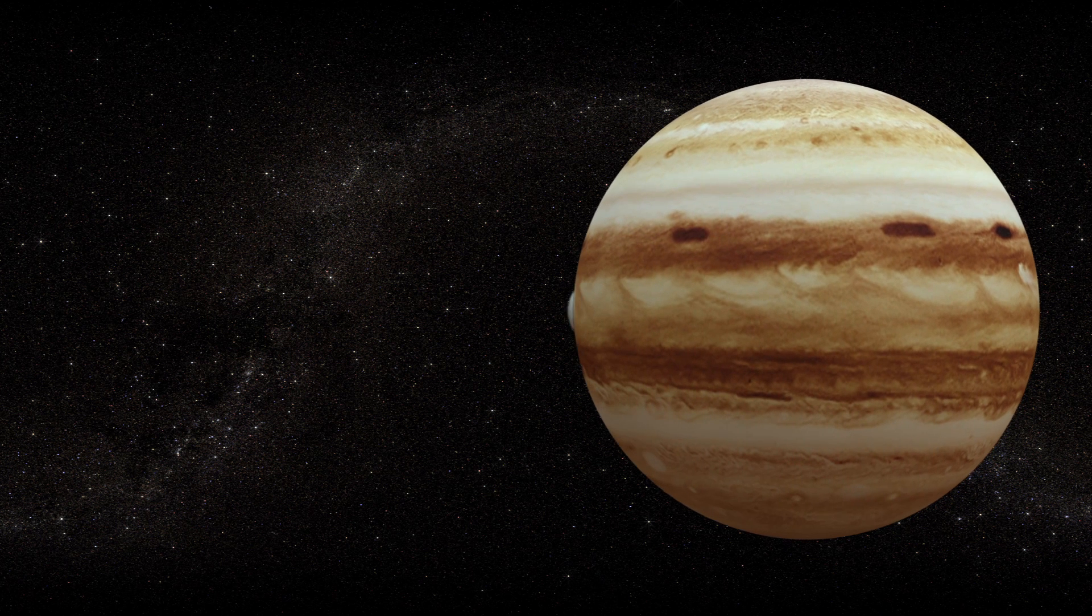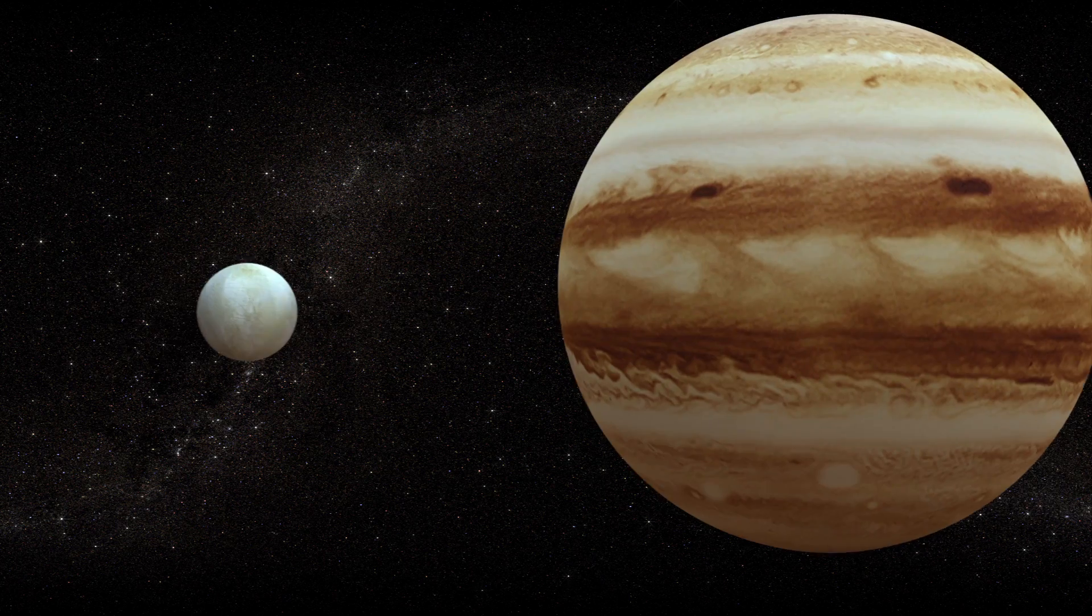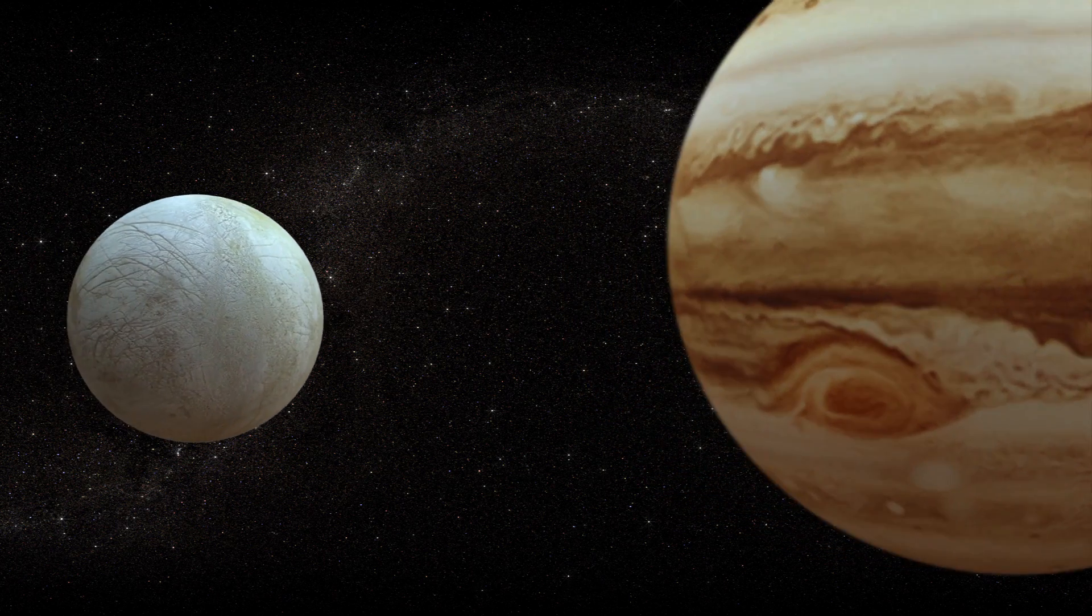Jupiter's moon, Europa, is thought to be covered by an icy crust at least 19 to 25 kilometers deep.